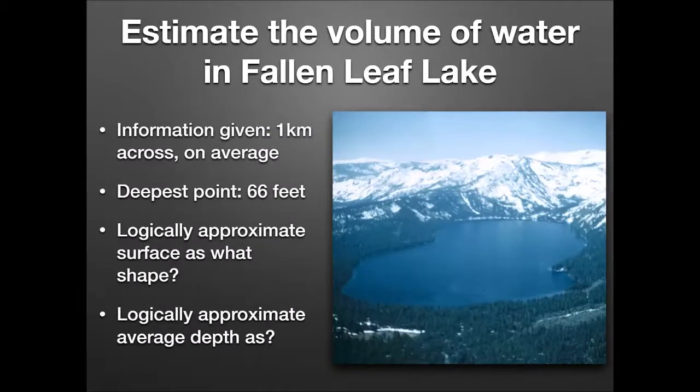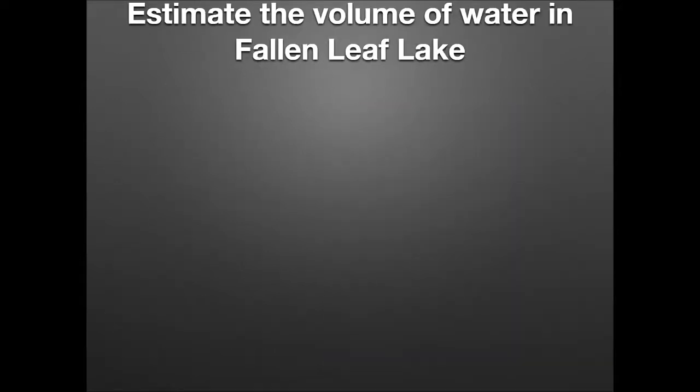Let's say I asked you to estimate the volume of water in Fallen Leaf Lake. I'm going to give you a little bit of information. It's one kilometer across, on average. At its deepest point, it's 66 feet deep. It's not a very deep lake compared to Lake Tahoe. Now I want you to logically approximate its surface first. We need to approximate the shape of this lake. What's the cue? The fact that we are finding the volume. We're going to use some geometric formulas if we can approximate the shape of this lake as something. What would we then approximate its average depth as? A lot of estimations you'll do in physics involve you approximating obscure or abstract or amorphous shapes as simple geometric shapes.